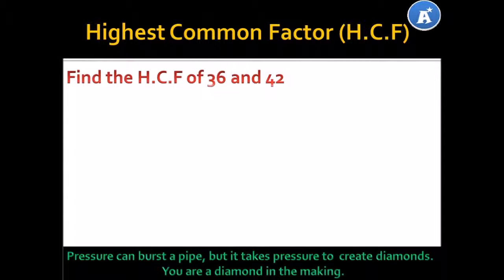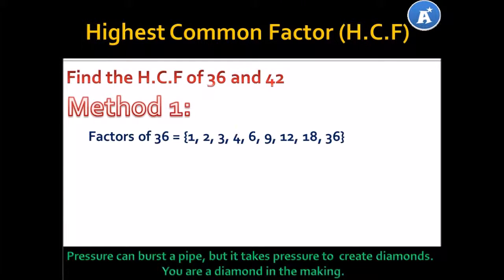Now, here we go to something that's even more fun — this is the highest common factor. Do you remember what a factor is? A factor of a number is simply all those numbers that can go into that number without leaving a remainder. So, let's look at the highest common factor of 36 and 42. There are two methods in which you can do this. Let's look at Method 1. In Method 1, you simply list the factors of 36: 1, 2, 3, 4, 6, 9, 12, 18 and 36.